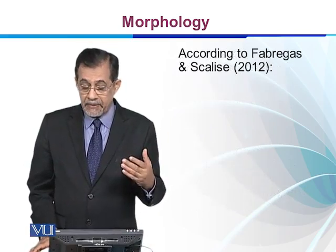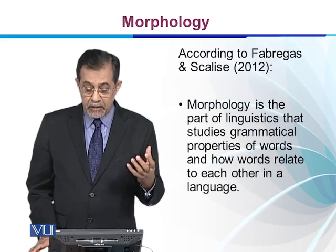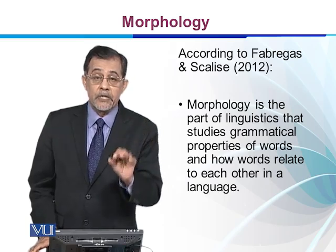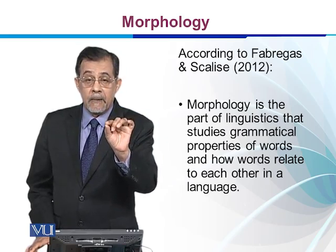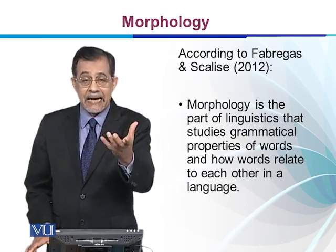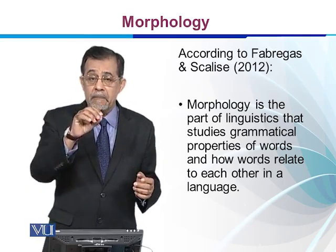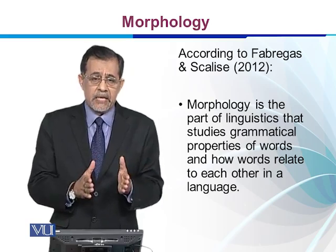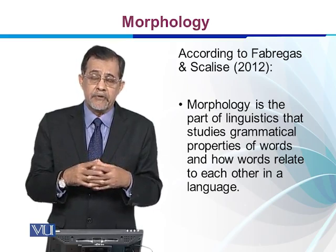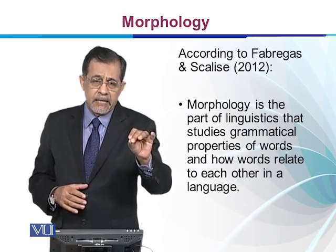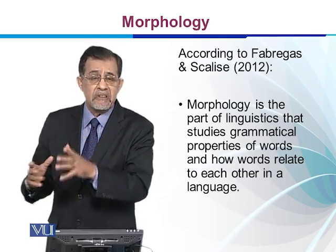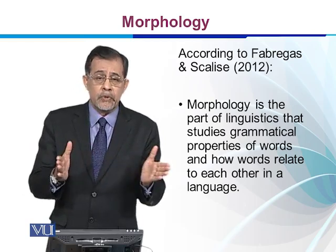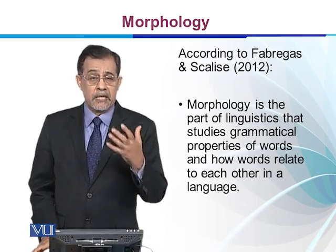According to Fabregas and Scalise, Morphology is the part of linguistics that studies grammatical properties of words and how words relate to each other in a language. For example, boy and boys, cat and cats — what grammar is involved in these? We make words from noun into adjective, adverb, etc. We also study how words are related — for example, a verb like write: write, writing, wrote, written. All these forms and their relationships are discussed in Morphology.